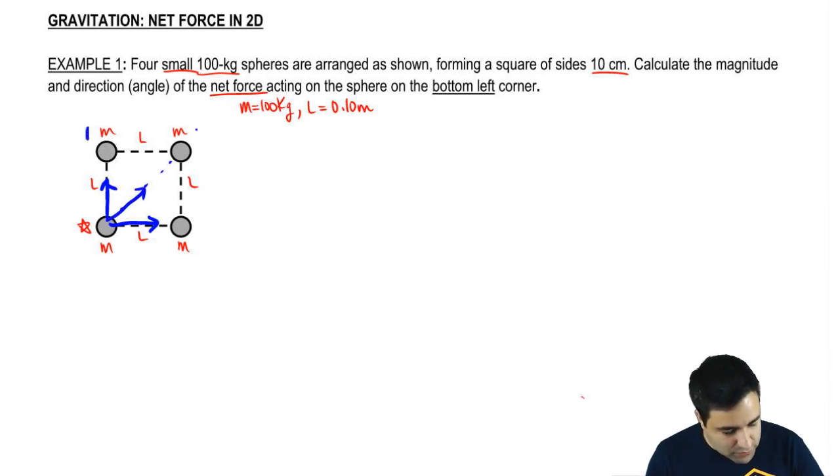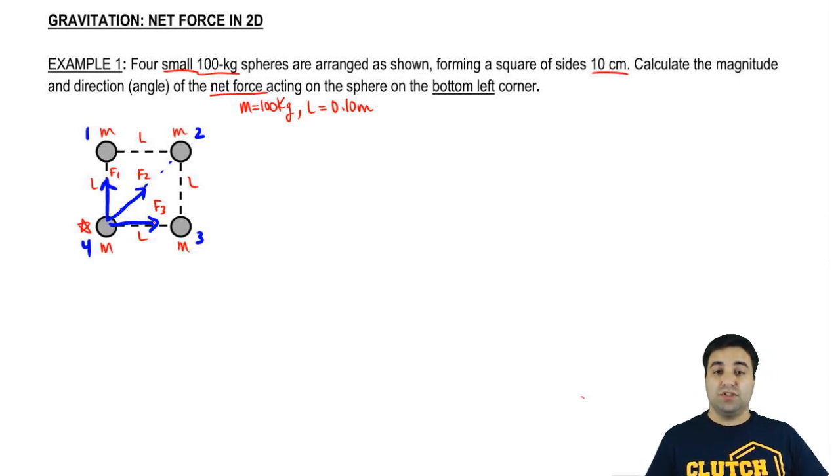I'm going to call this 1, 2, 3, 4. So I can call this F1, F2, and F3. Remember that these forces are mutual forces, so this guy is also being pulled down this way, but now we're focusing on object 4, the one on the bottom corner.